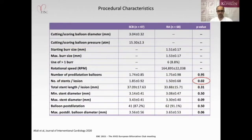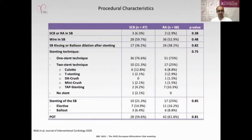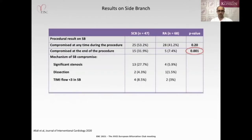Concerning procedural characteristics, we observed more implanted stents per lesion in the scoring/cutting balloon group. For bifurcation treatment, kissing balloon dilatation of the side branch was performed in about one-third of lesions. We performed mainly a one-stent technique; the most used two-stent technique was culotte stenting. Regarding the primary endpoint, compromised side branch at procedure end was significantly higher in the scoring/cutting balloon group at 31.9% compared to rotational atherectomy at 7.4%, mainly due to a higher rate of significant stenosis.